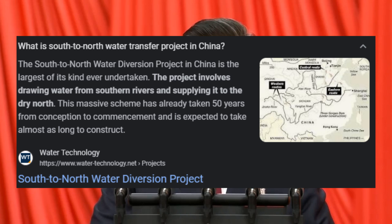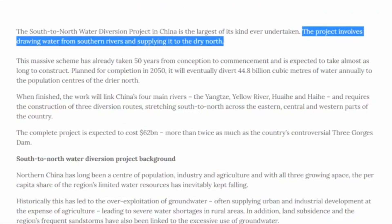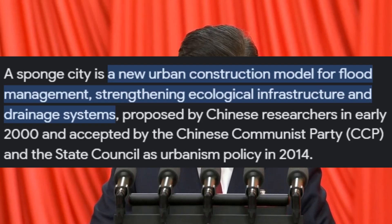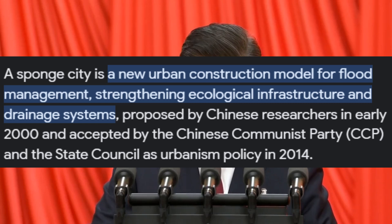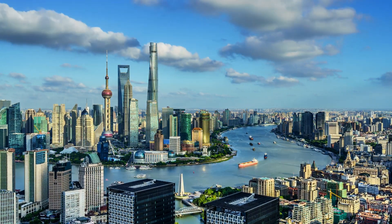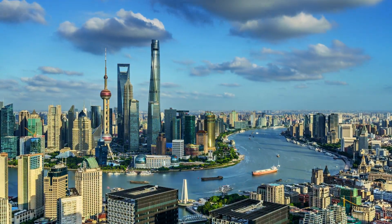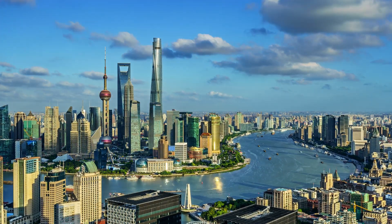To address these challenges, the Chinese government has launched several major initiatives, including the South-to-North Water Transfer Project, which aims to transfer water from the south to the north, and the Sponge City Initiative, which seeks to increase permeable surfaces in urban areas to reduce flooding and improve water quality. However, these initiatives face significant challenges, including environmental concerns and high implementation costs.